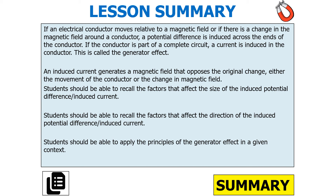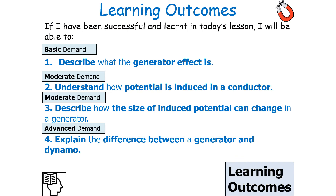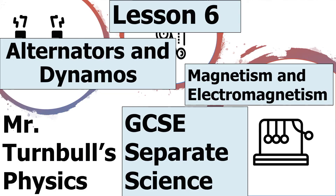You should be able to apply the principles of the generator effect in two examples: understanding how it's used in an alternator to generate AC, and in a dynamo to generate DC. You should also be able to draw and interpret graphs of potential difference generated in a coil against time. In summary, we can describe the generator effect, understand how potential is induced in a conductor, describe how the size of the induced potential can change in a generator, and explain the difference between a generator and a dynamo. Thank you very much for listening, and have a lovely day.